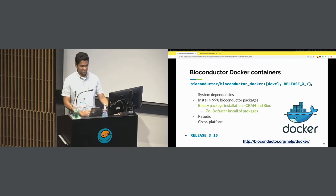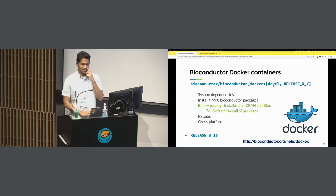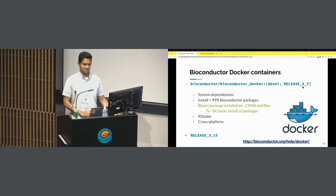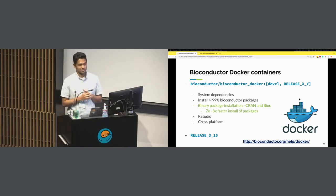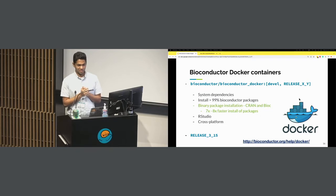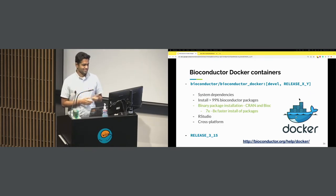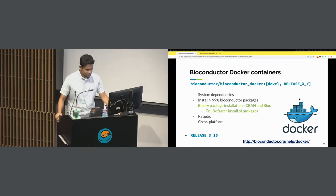If you wanted to use these Docker images, you'd say docker pull bioconductor/bioconductor_docker with the appropriate tag — 'devel' for development, or 'RELEASE_3_X' for a release version. The advantages of these Docker images are they have all the system dependencies, including Redis, already available. So you wouldn't have to install anything separately, and all the Bioconductor packages will install — about 99.7% of them.